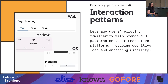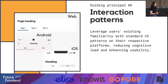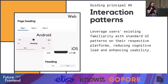Guiding principle number six: interaction patterns. We talked about how components have specific behaviors, but interaction patterns go further — it can be about navigation. When defining navigation for web, you can use tabs, for example. In Android and iOS you have a similar idea of tabs, but especially for iOS it's quite different — we use something called a segmented control. You should leverage the user's existing familiarity with standard UI patterns in their respective platform, reducing cognitive load and enhancing usability. This also means that as a designer, you need to provide a good explanation when a navigation pattern uses a tab on web but a segmented control on iOS — it's because of usability and what iOS users know how to interact with.